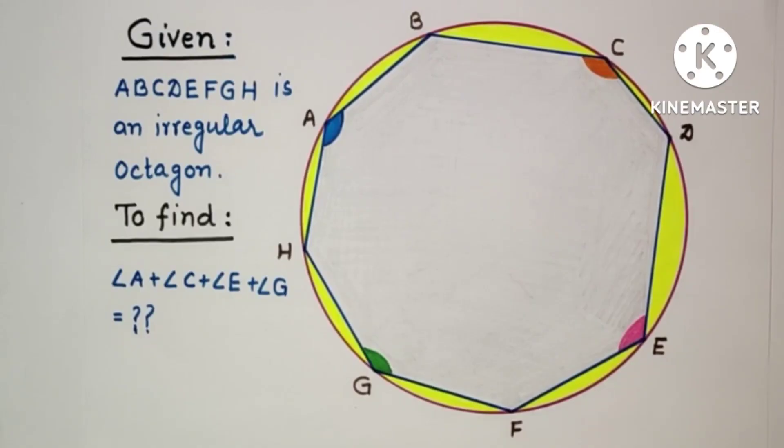Hello friends and viewers, welcome. Today we will discuss a 10th grade geometry problem which is simple but tricky and interesting. We are given that ABCDEFGH is an irregular octagon, meaning all sides of the octagon are different, not equal.